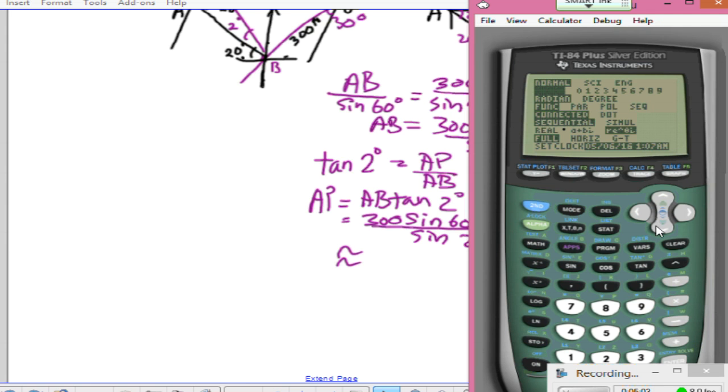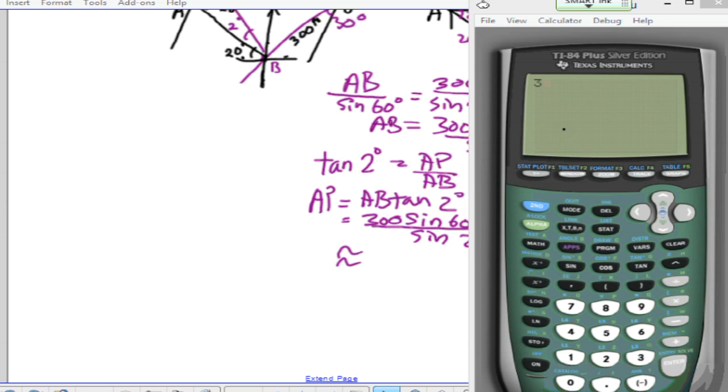Enter, all right, quick. And now I'm going to have 300 times sine of 60 degrees times tangent of 2 degrees, and then divided by sine of 20 degrees. All right, and press enter.